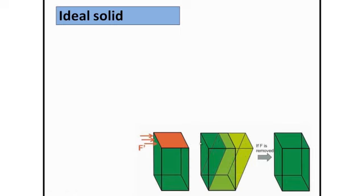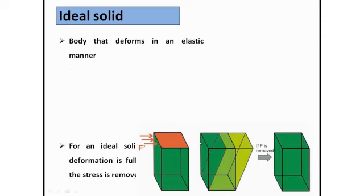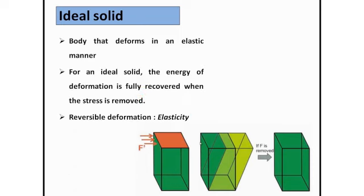Basically, if we apply force to an ideal solid and the force is removed, some deformation takes place, but the solid comes back to its original position — it deforms in an elastic manner. For an ideal solid, the energy of deformation is fully recovered. It releases the energy when the stress is relieved, and the solid returns to its original position. This reversible deformation is known as elasticity.